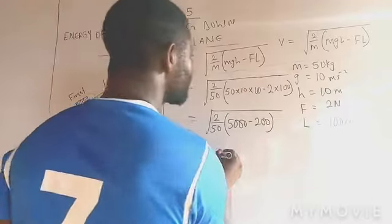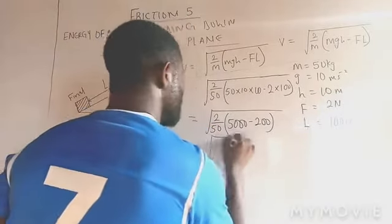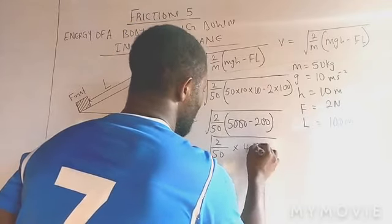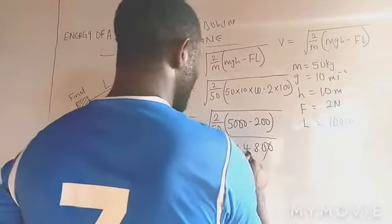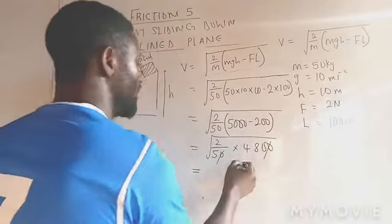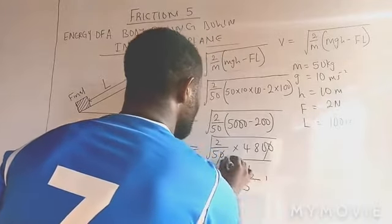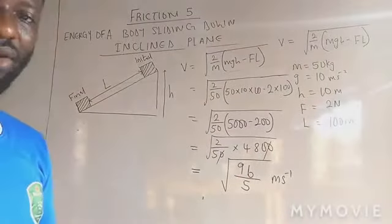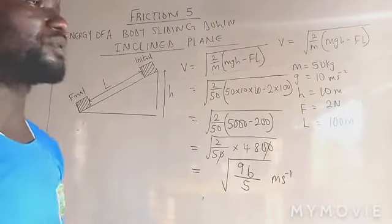So this will give me 5,000 minus 200, that is 4,800. Square root 2 over 50 multiply by 4,800. When I multiply 2 by 8, I have 16, 6 remainder 1, that is 96 over 5 meter per second. When you get your calculator you can find the square root of 96 over 5. Whatever value it gives you, that will give you the correct answer.